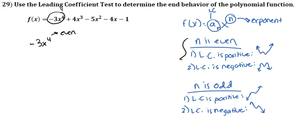Since n is even, we look at the even set of rules. Our leading coefficient is negative, so we're looking at rule two. This means our graph is going to be dropping on both the left-hand side and the right-hand side of the graph.